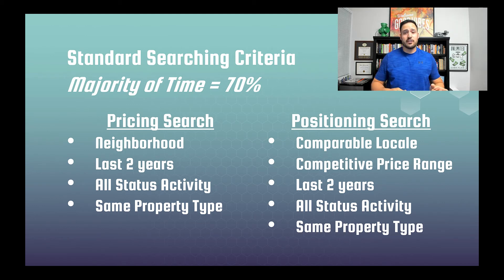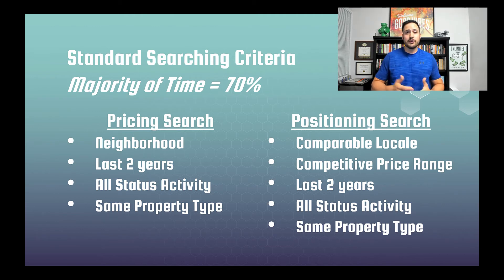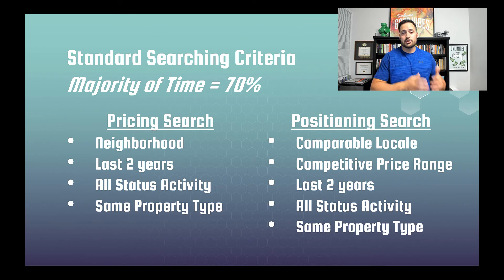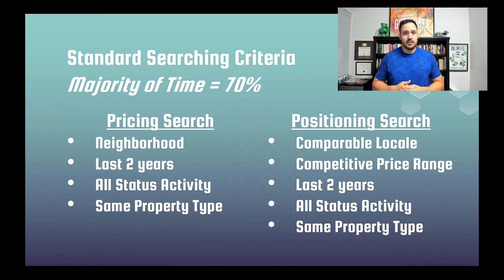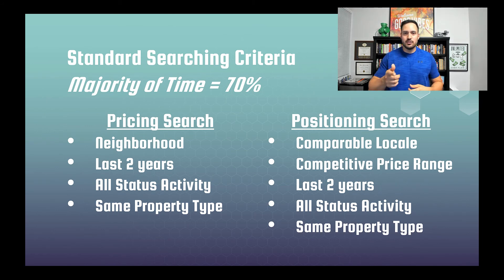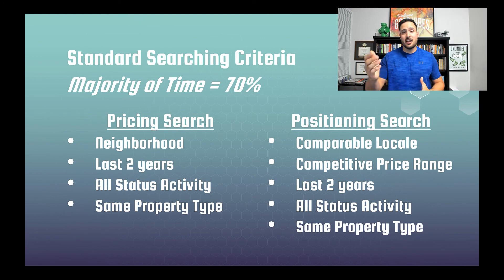Once you have that competitive price range, you'll move on to the positioning search. You're going to look at a comparable locale, which in many cases could be a city or an area of a city — you're the real estate agent and you'll know your area best. You're going to find the area most comparable to where your buyers are searching for that price range, and search in that area for that competitive price range — again, last two years, all status activity, and the same property type. This is for positioning, so you're positioning against currently for-sale and under-contract properties. It's not the data you need — it's the data the program needs. It needs that information to run true and correct historical algorithms so it can predict the future and give you a picture of what's coming down the road in the market.